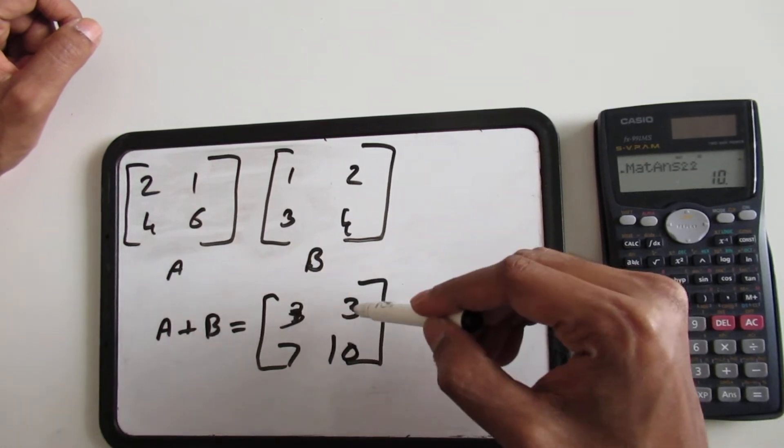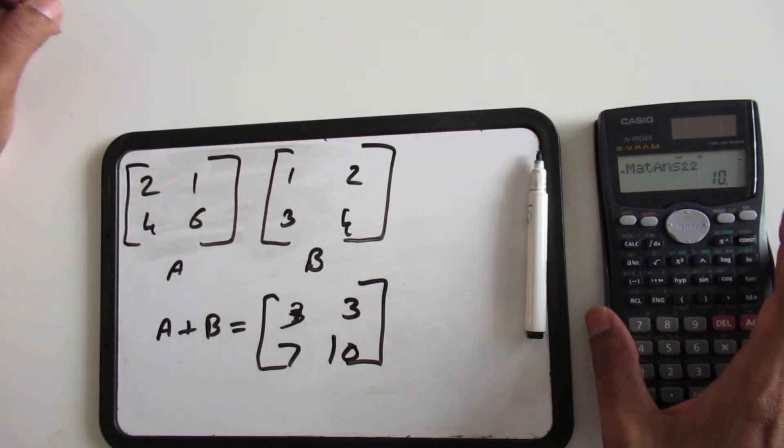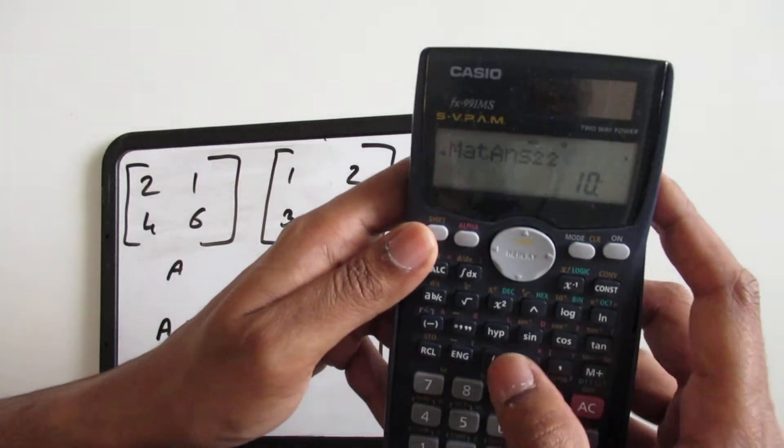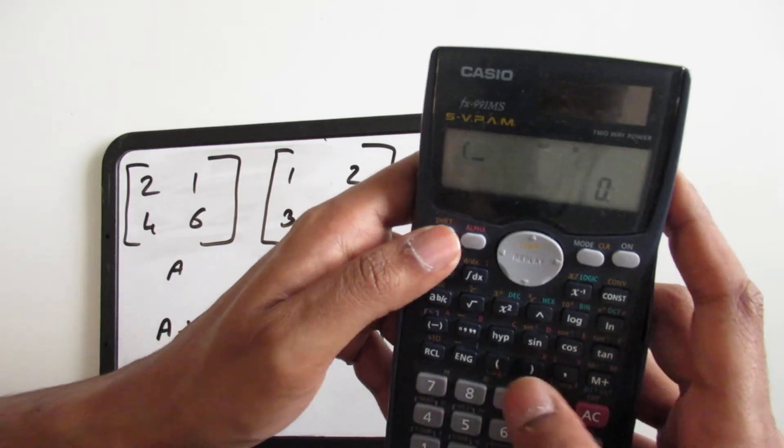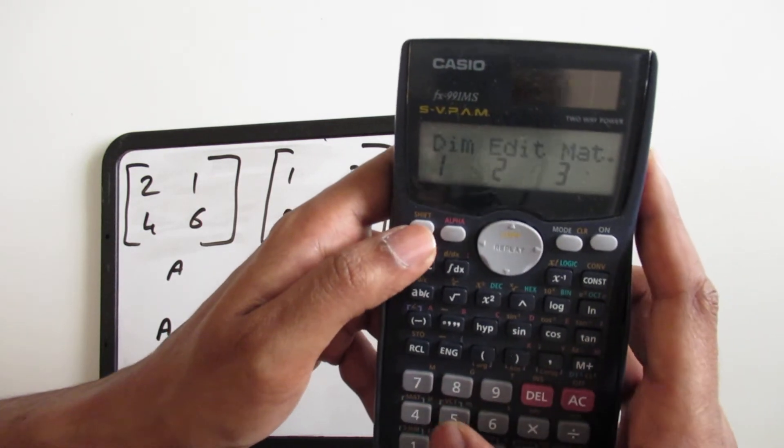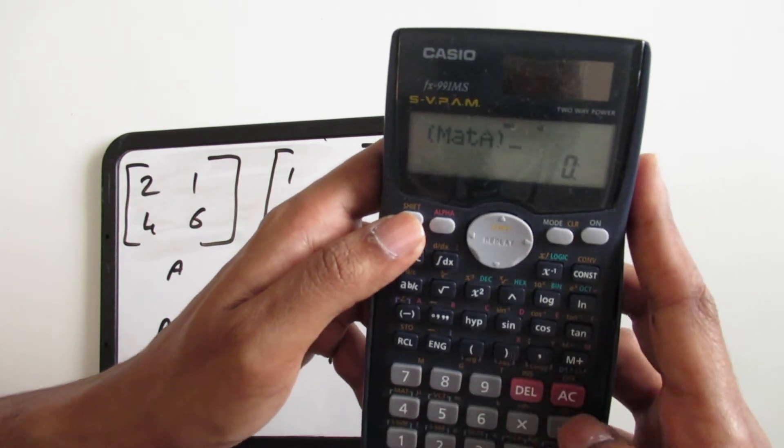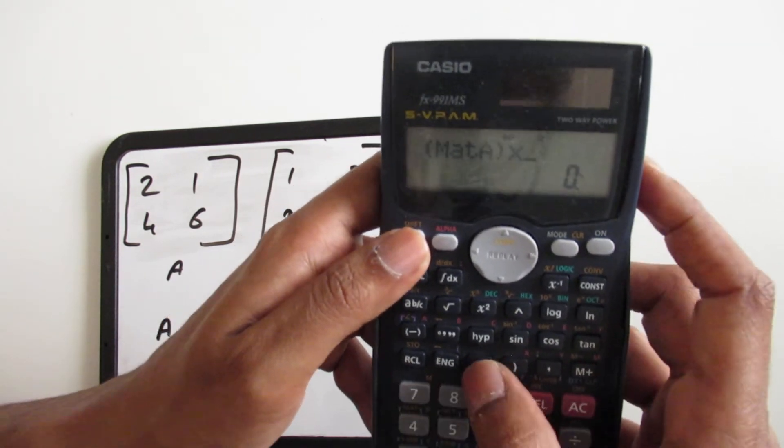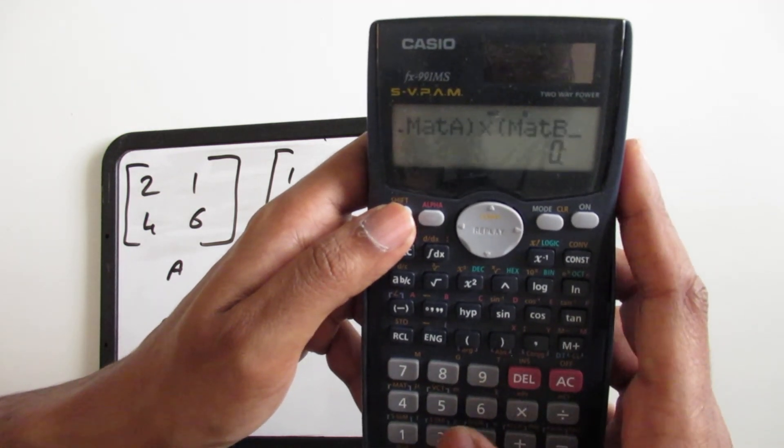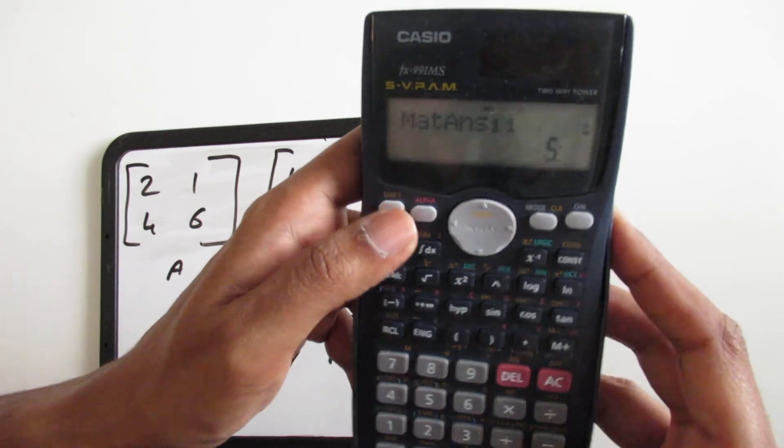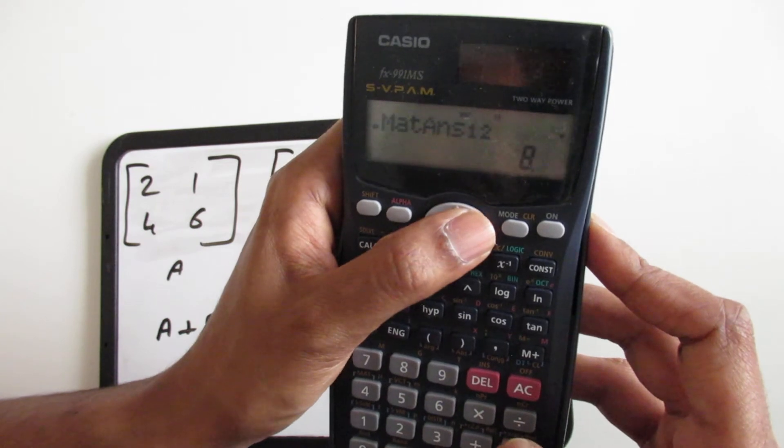You can also do matrix multiplication. You would go ahead and do it the same way. Clear everything. Remember to put it inside the parentheses, so matrix, we select matrix A, and just press the multiplication sign. Go ahead and select the matrix again, this time we select matrix B. Then you get the answer. So matrix A times matrix B is 5, 8, 22, 32.